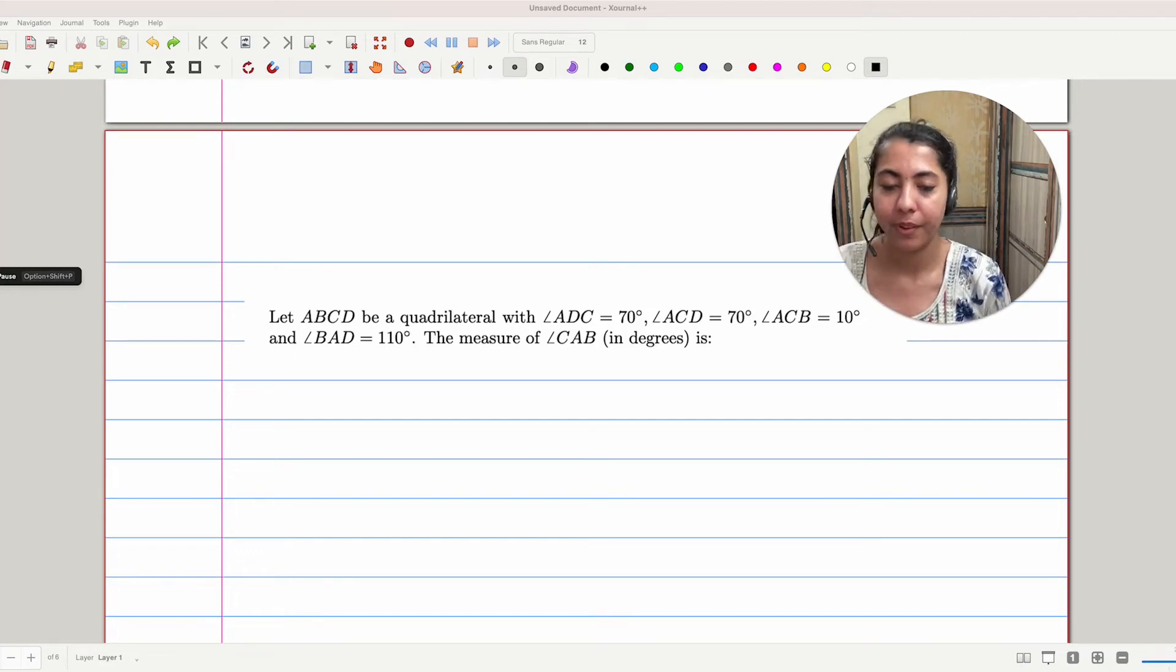Problem number 4. This problem is based on geometry and it uses a property known as angle sum property. According to angle sum property, the sum of interior angles of a triangle is equal to 180 degrees.